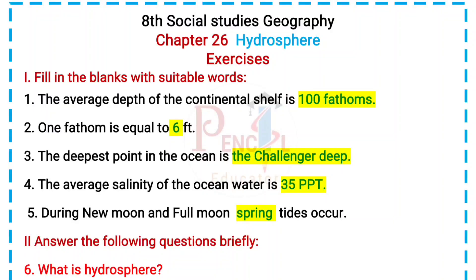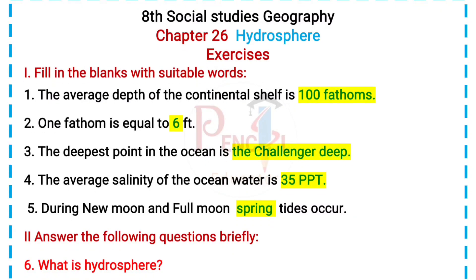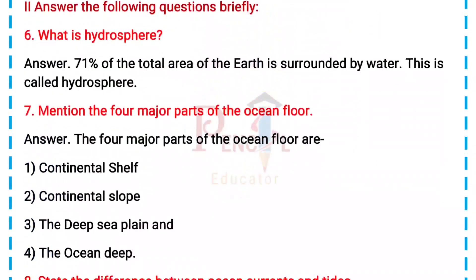4. The average salinity of the ocean water is 35 ppt. 5. During new moon and full moon, spring tides occur.